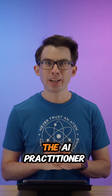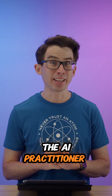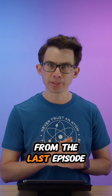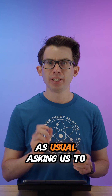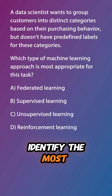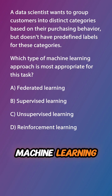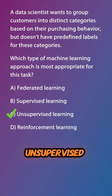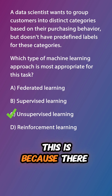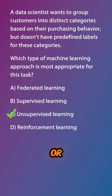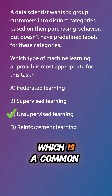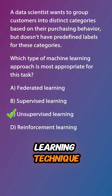Welcome to episode 5 of the AI Practitioner Exambyte series. Let's start by looking at the review question from the last episode, asking us to identify the most appropriate type of machine learning. The answer is C, unsupervised learning. This is because there are no predefined labels or categories and the goal is to discover inherent patterns or groupings in the data, which is a common unsupervised learning technique.